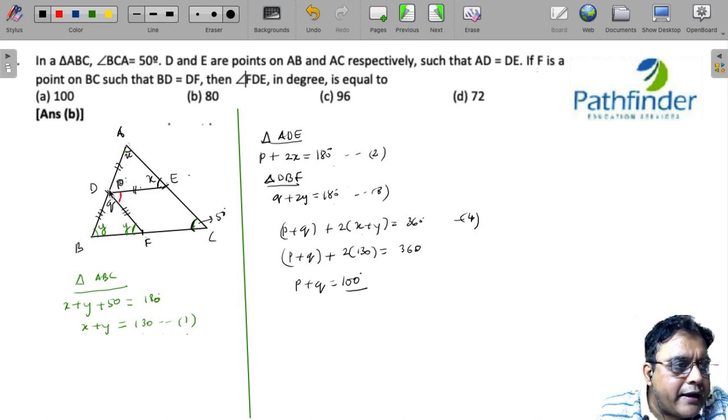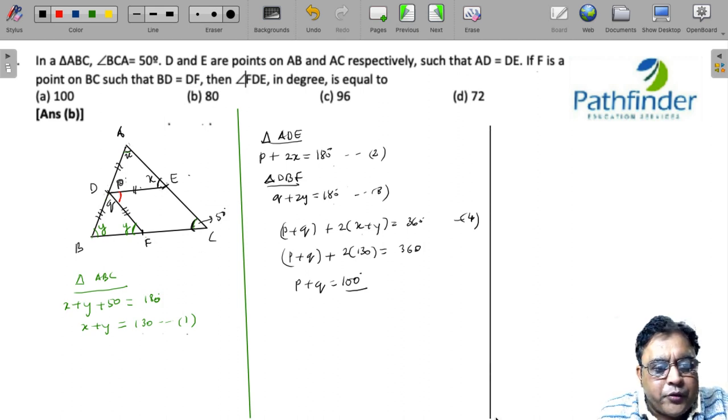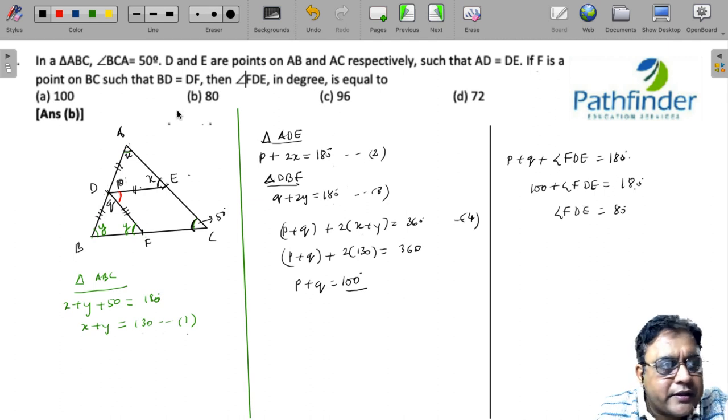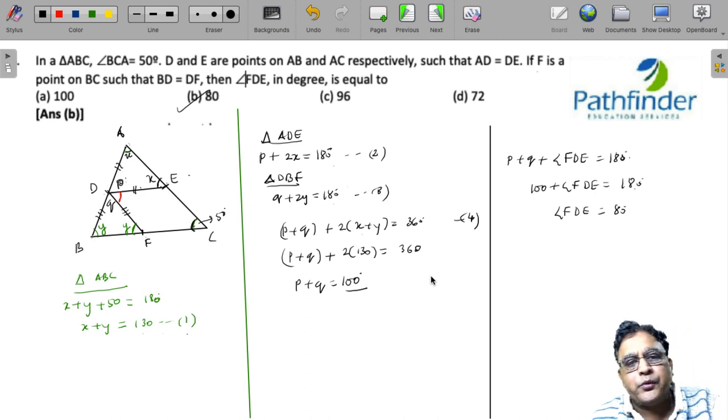Now if you look at angle ADE that is P, Q and let us call this angle EDF or FDE, you will have seen that this forms, the sum must be 180 degrees, so P plus Q is 100 plus FDE is 180 degrees. So angle FDE must be 180 minus 100, that is 80 degrees, which is your answer.